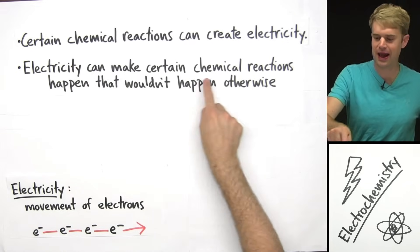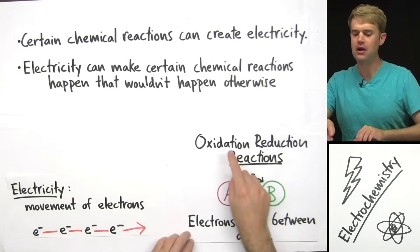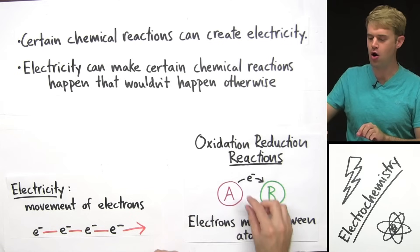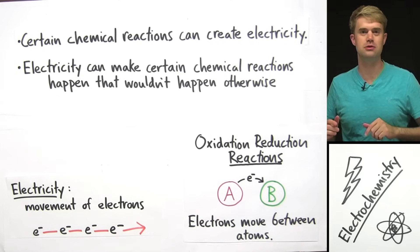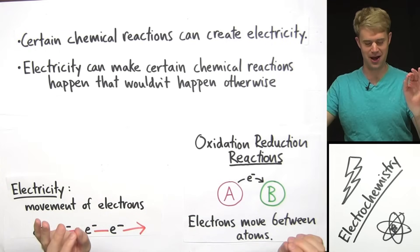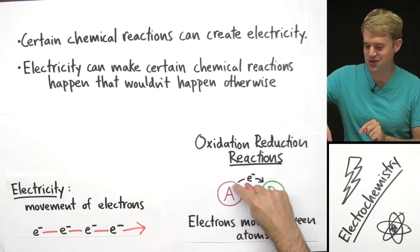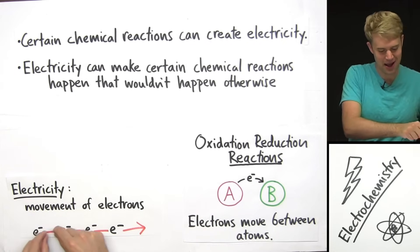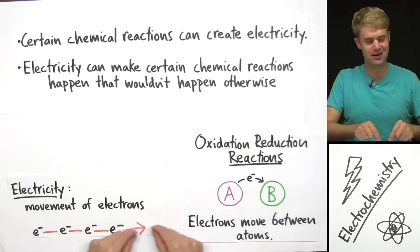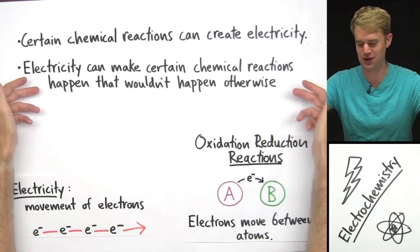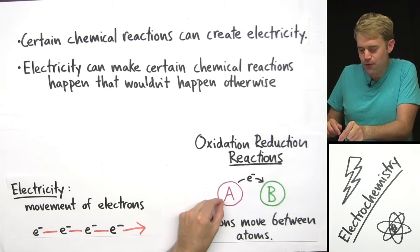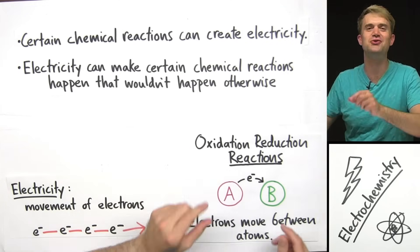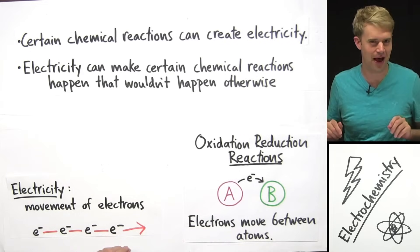So if electricity is about moving electrons, that means the chemical reactions we're going to be talking about are also going to involve movement of electrons. That means these chemical reactions will tend to be oxidation-reduction reactions, because these are chemical reactions where electrons move between atoms. We can use electrons moving between atoms in an oxidation-reduction reaction to make electricity, and we can use electricity to force electrons to move between atoms to make oxidation-reduction reactions happen. Let's look at how that would work.